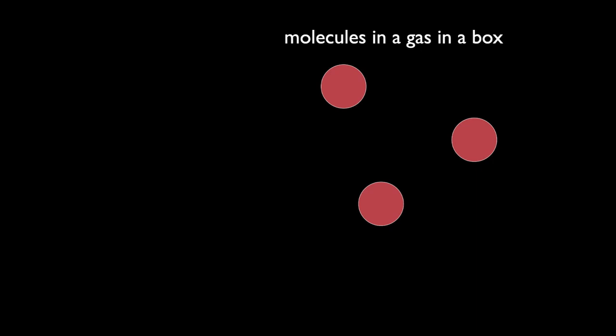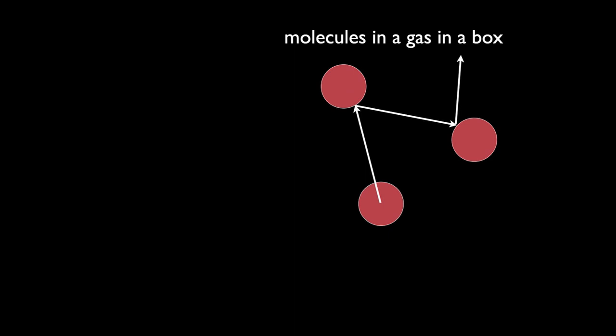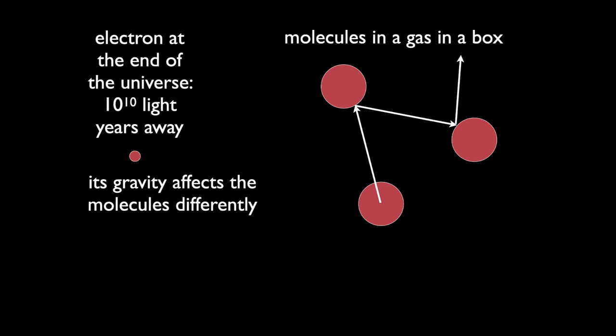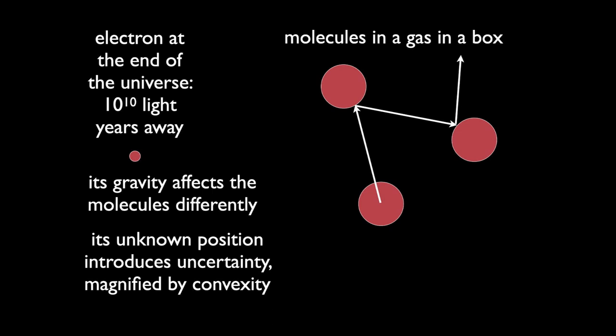Here you have molecules in a gas in a box. They bounce around under their mutual influence — I'm thinking of them classically. Of course, there are perturbations from outside. What's the weakest perturbation I can think of? Take the gravity from an electron at the observable limit of the universe, 10 to the 10 light years away. Well, you don't know where it is. Its gravity affects the molecules differently, and that introduces uncertainty, which is magnified by this convexity.